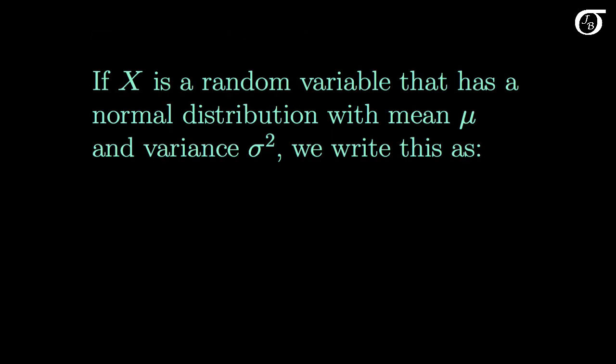There are an infinite number of different normal distributions, corresponding to all the different possible values for mu and sigma. If x is a random variable that has a normal distribution with mean mu and variance sigma squared, we write this as the random variable x is distributed normally with a mean of mu and a variance of sigma squared.